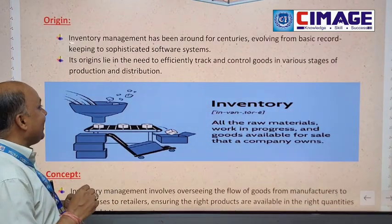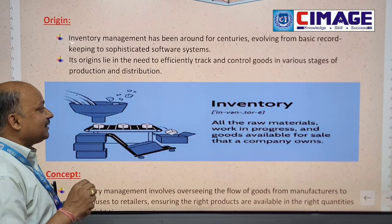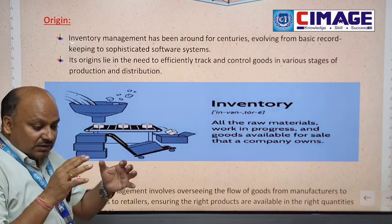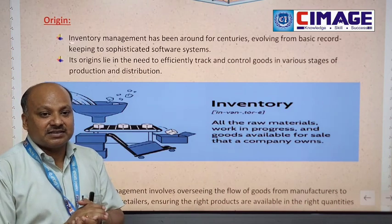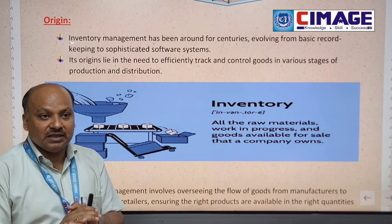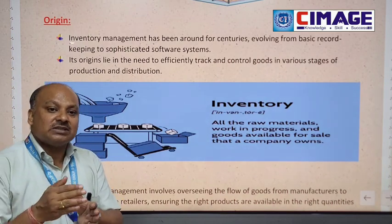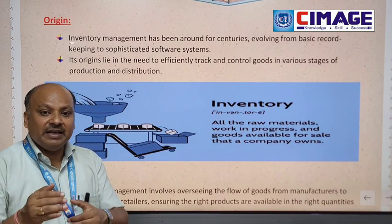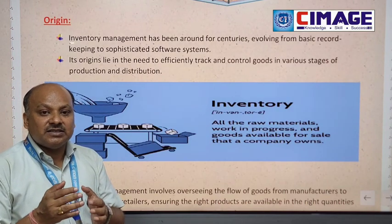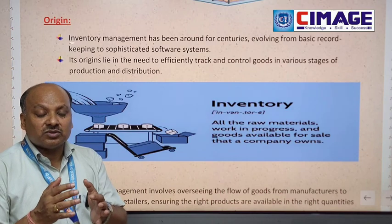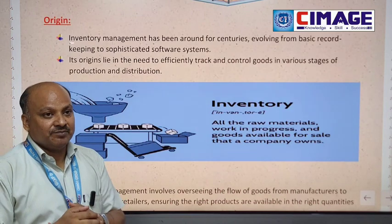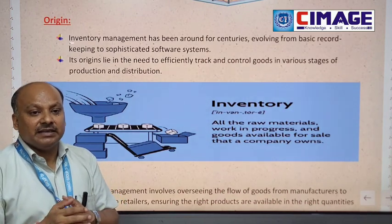The origin of inventory lies in the need to efficiently track and control goods in various stages of production and distribution. If we can take raw materials, we can transform them into semi-finished goods and finally convert them into finished products. In all these areas, we need to manage materials, components, and finished goods — and to serve this purpose, we need inventory.